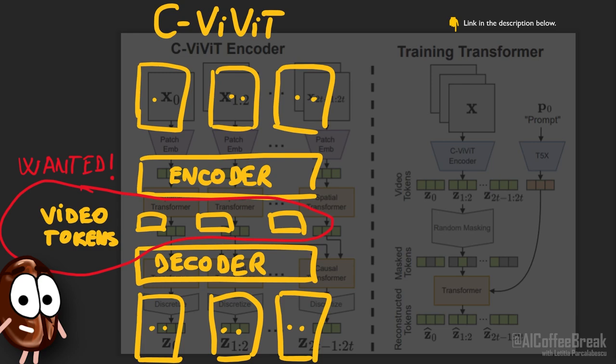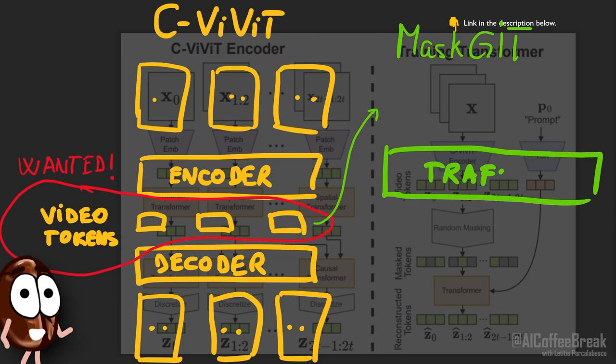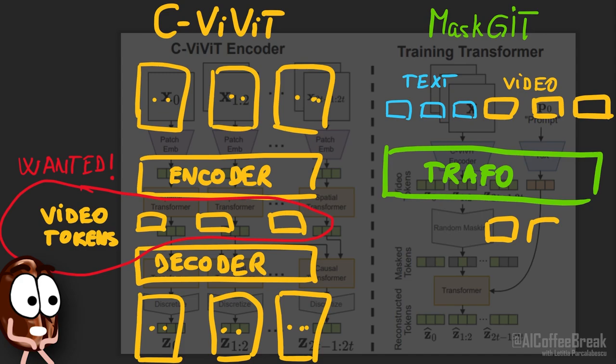...takes these video embeddings of CViViT and, with the text embeddings, produces continuations of the videos matching the text description. This was Fenaki at a high level — now let's get into more detail.